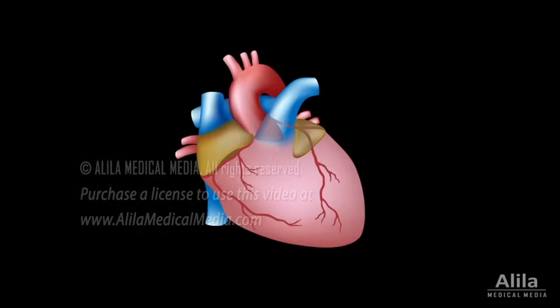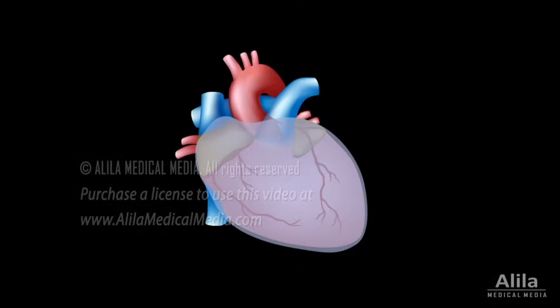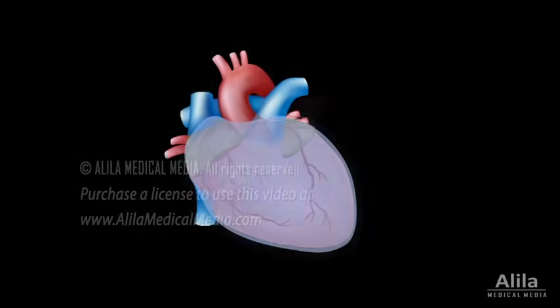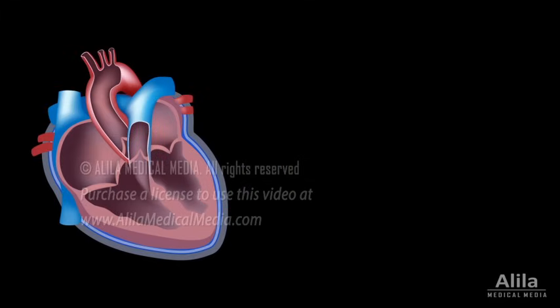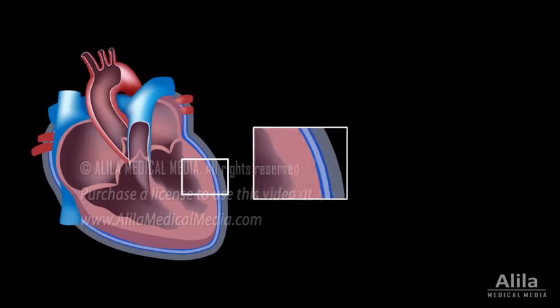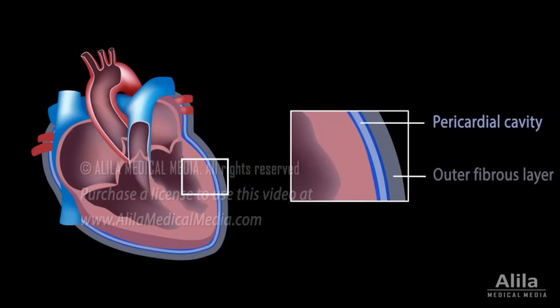The heart is enclosed in a double-walled protective sac called the pericardium. The pericardial cavity contains a fluid, which serves as lubricant and allows the heart to contract and relax with minimum friction.